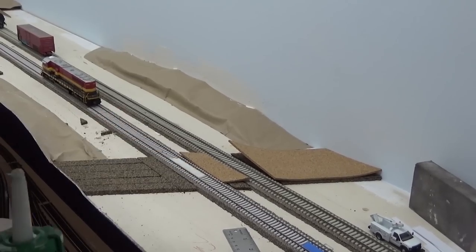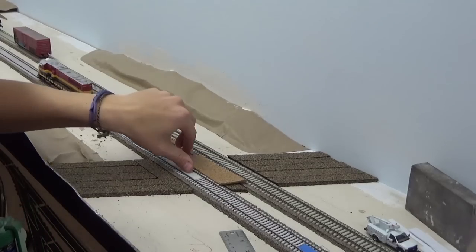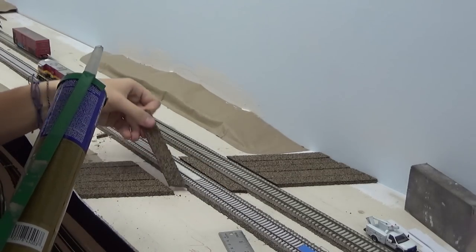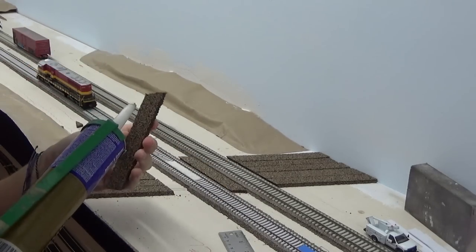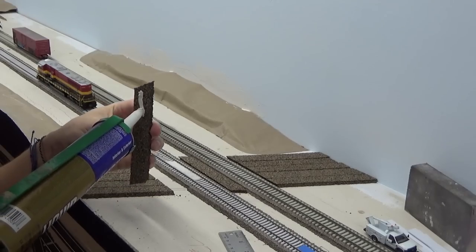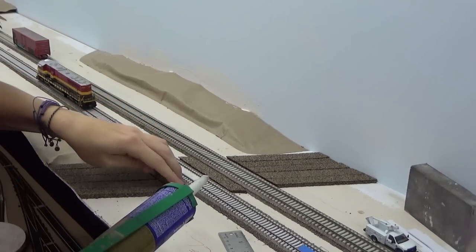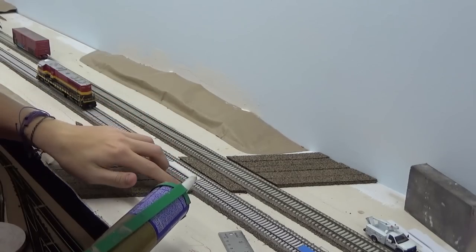I had to do a bit of testing to make sure that would work, and we'll see later how that comes together. Once I decided to go ahead with the HO and N-scale cork, I used liquid nails heavy-duty adhesive and glued down the HO scale pieces, and then next I glued down the N-scale sections.